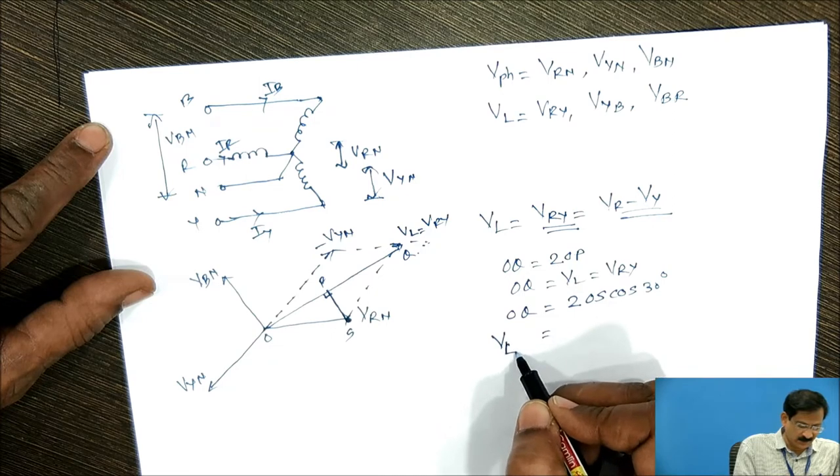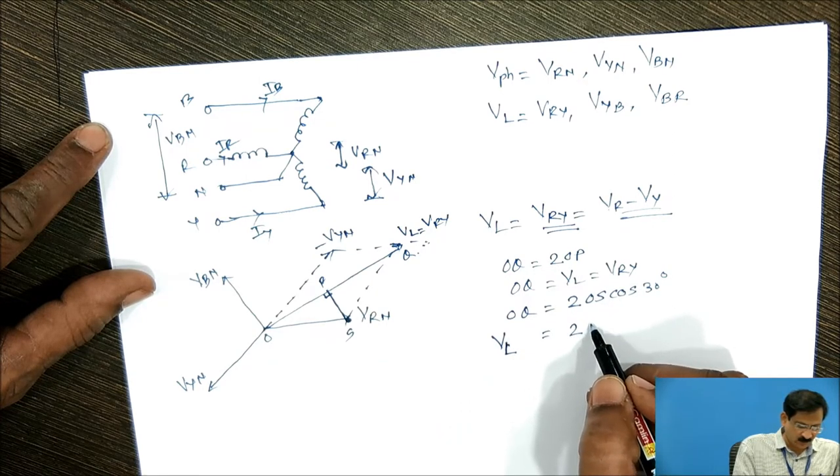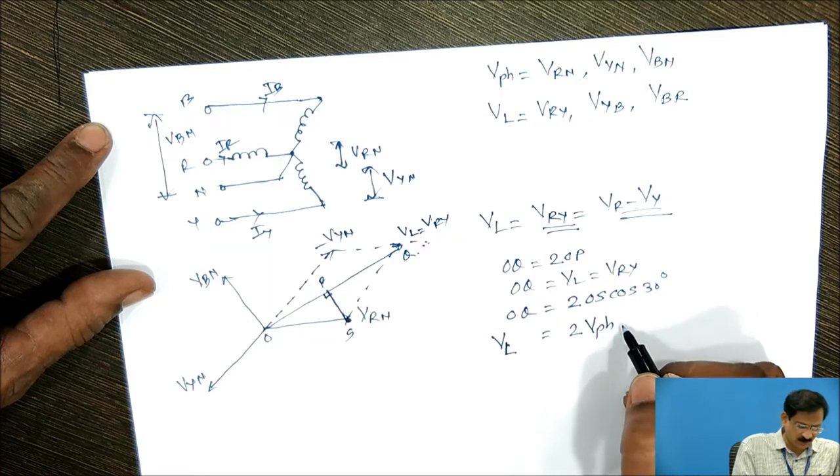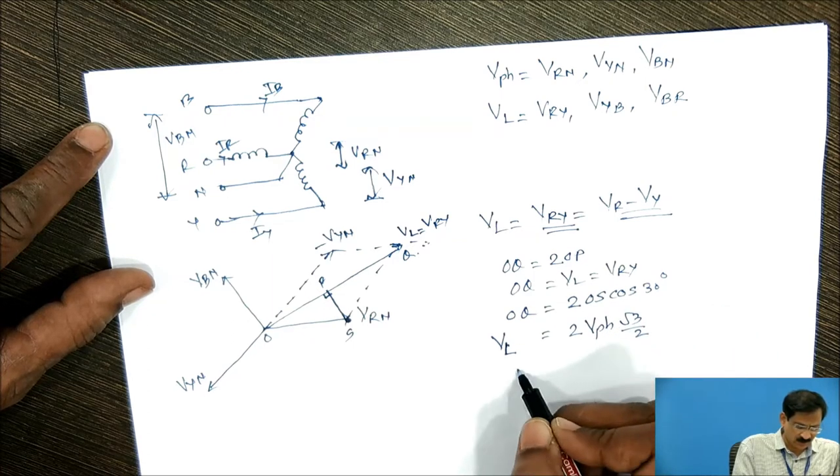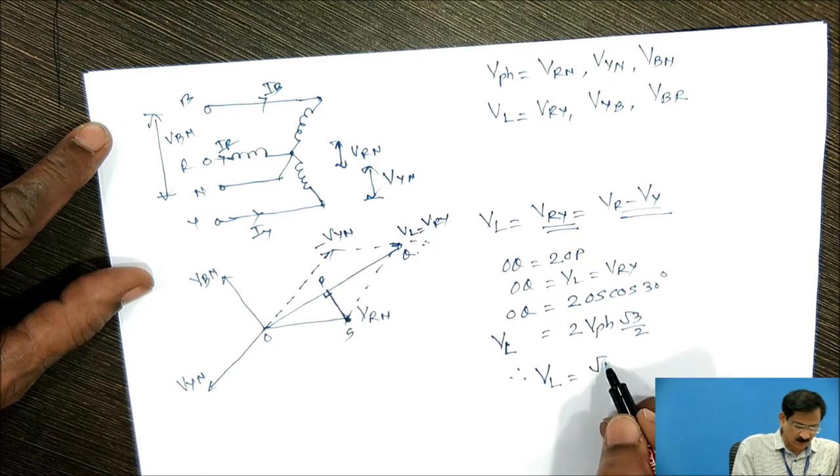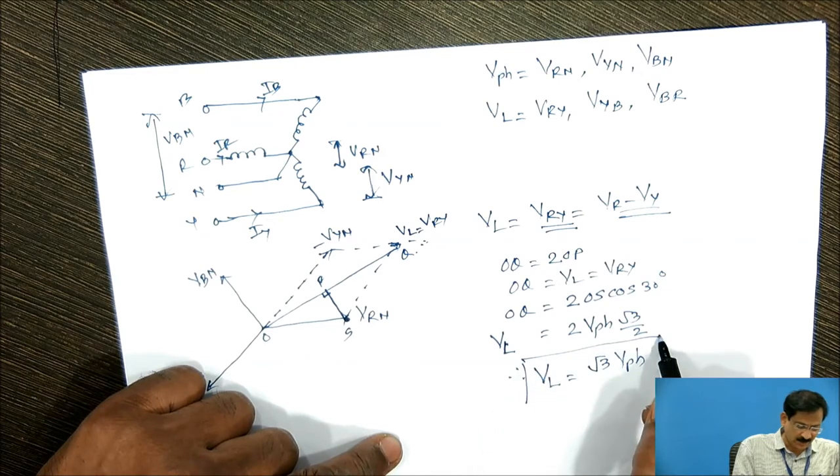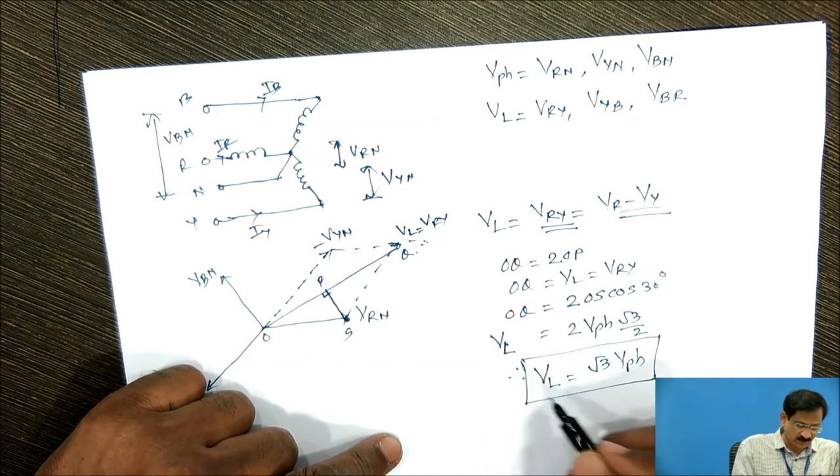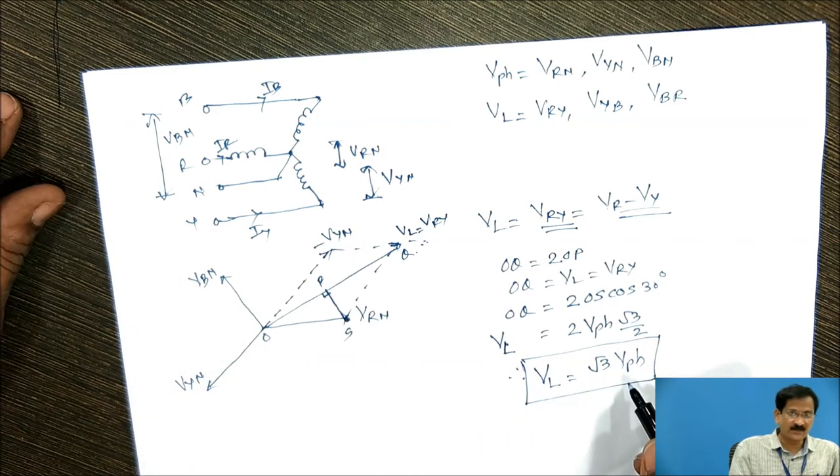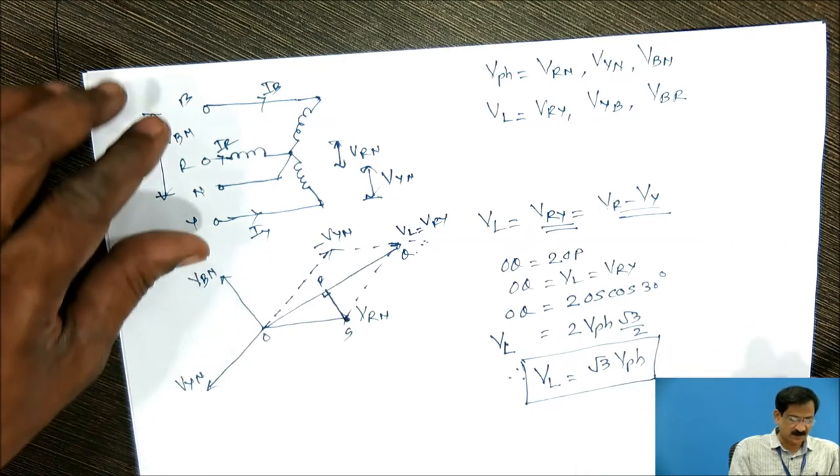Vph, V line, that is VRY, is equals to two times OS is what? It is Vph. cos of 30 is root 3 by 2. So finally, I can write VL is equal to root 3 times Vph. It means that line voltage is equals to root 3 times the phase voltage for a star connected system.